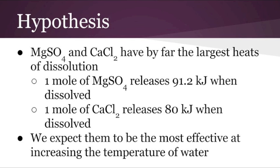We decided that we wanted to pursue the most accurate temperature change, instead of finding the quickest reaction or the least costly reaction. Before beginning experimentation, we researched the heats of dissolution of the seven ionic compounds. We found that magnesium sulfate and calcium chloride released the most energy, 91.2 kilojoules and 80 kilojoules, respectively.